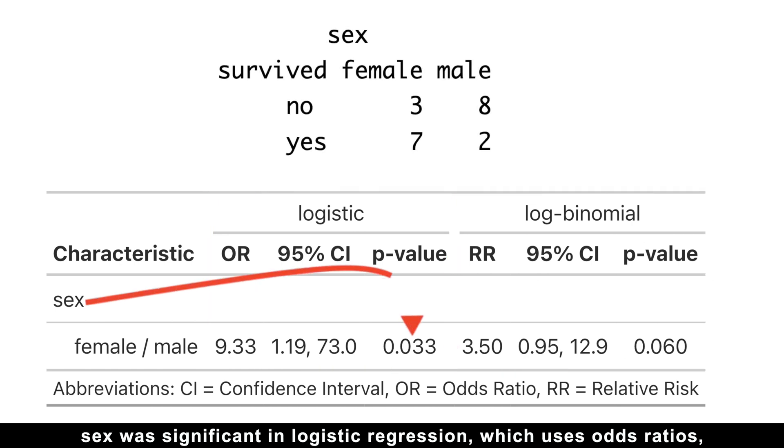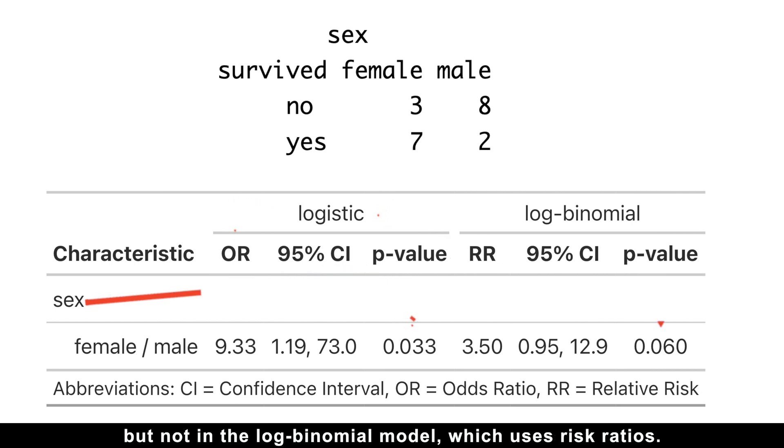For example, sex was significant in logistic regression, which uses odds ratios, but not in the log-binomial model, which uses risk ratios. So which one should we trust?